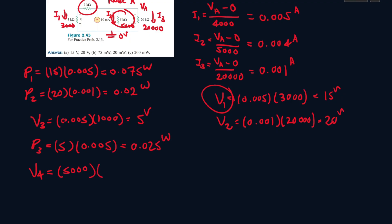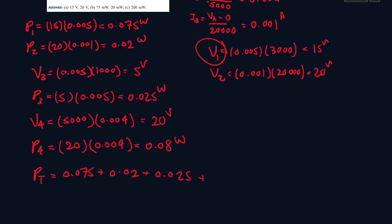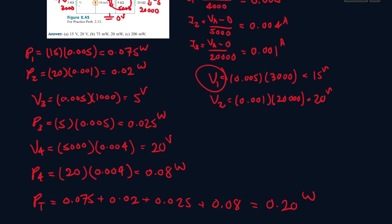V4 equals 5000 ohms times i2 (0.004), so 5000 times 0.004 equals 20 volts. P4 equals v4 times i2: 20 times 0.004 equals 0.08 watts. Adding all powers together: P_total equals 0.075 plus 0.02 plus 0.025 plus 0.08, which equals 0.20 watts. That matches what we have here, just in milliwatts.